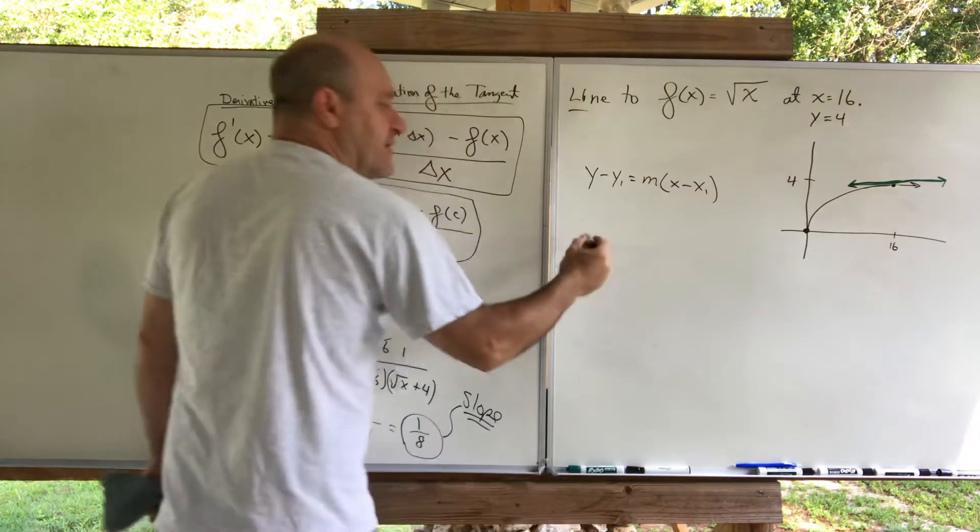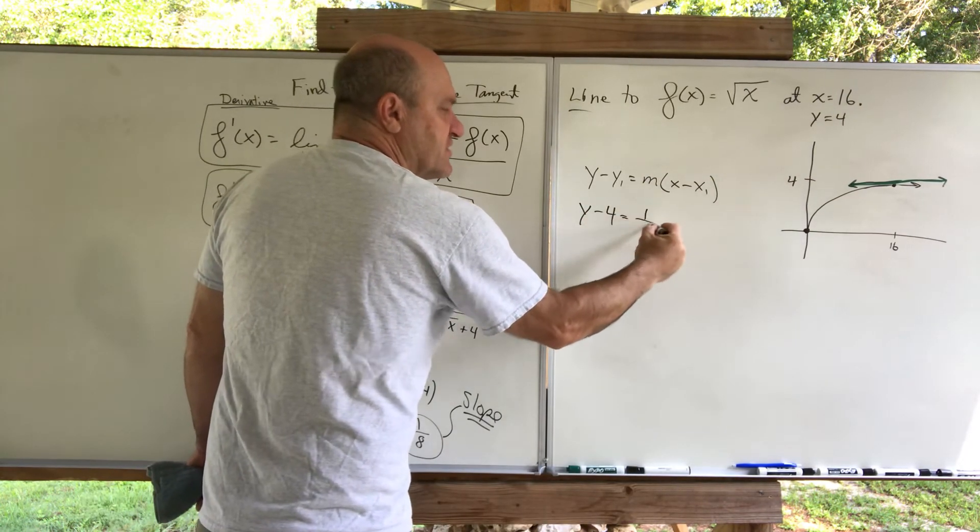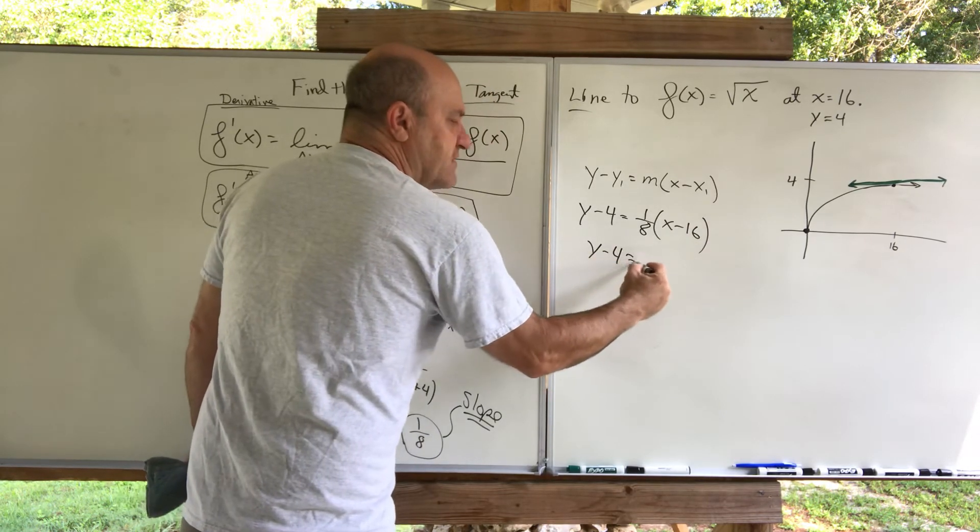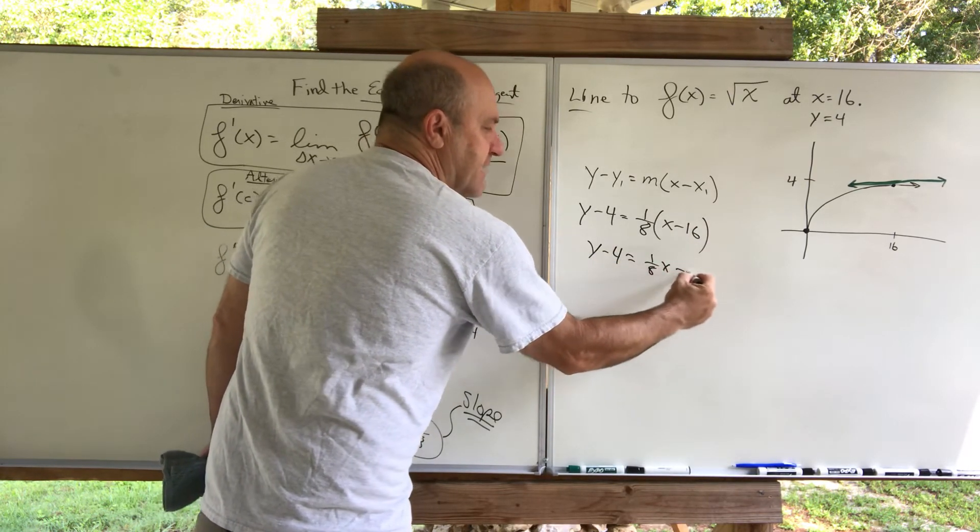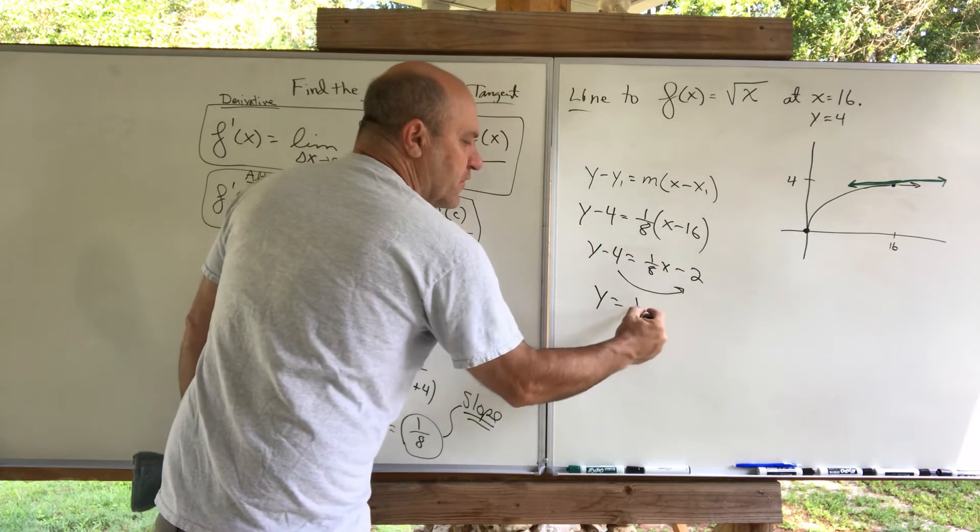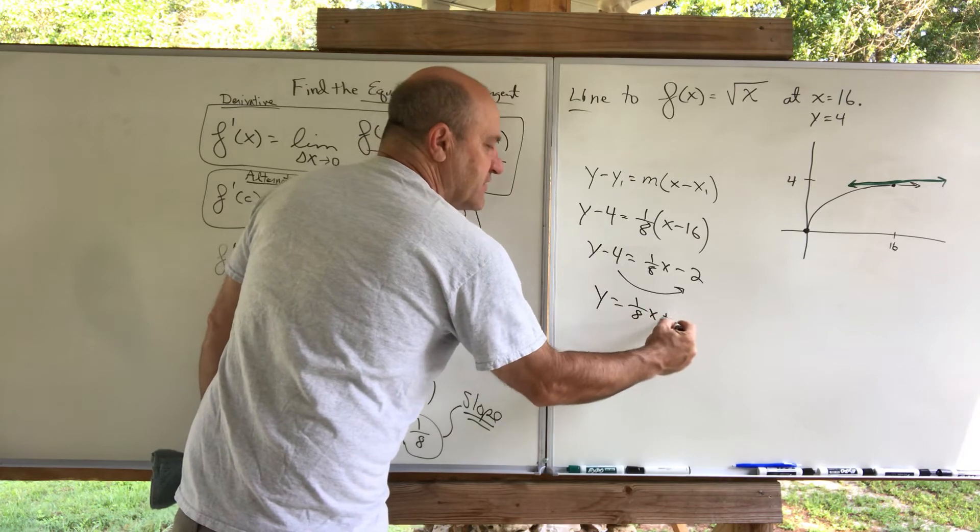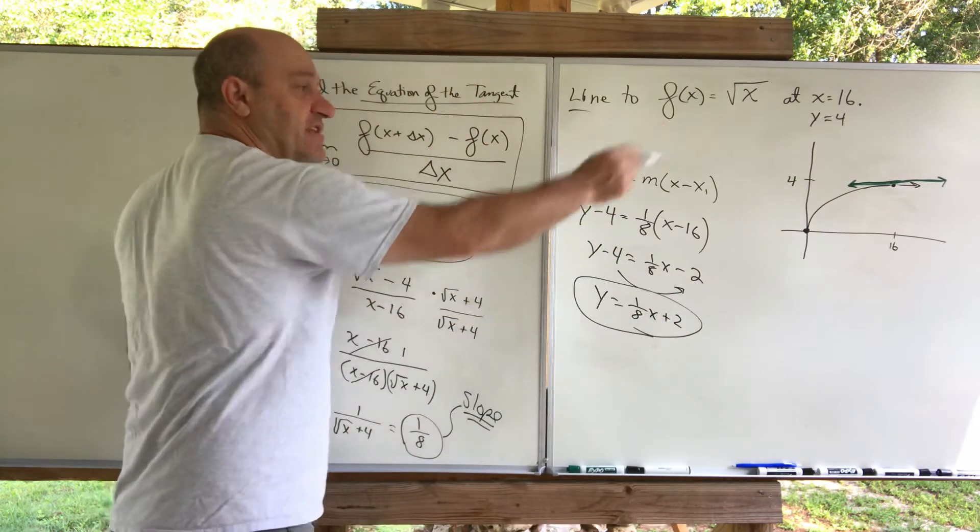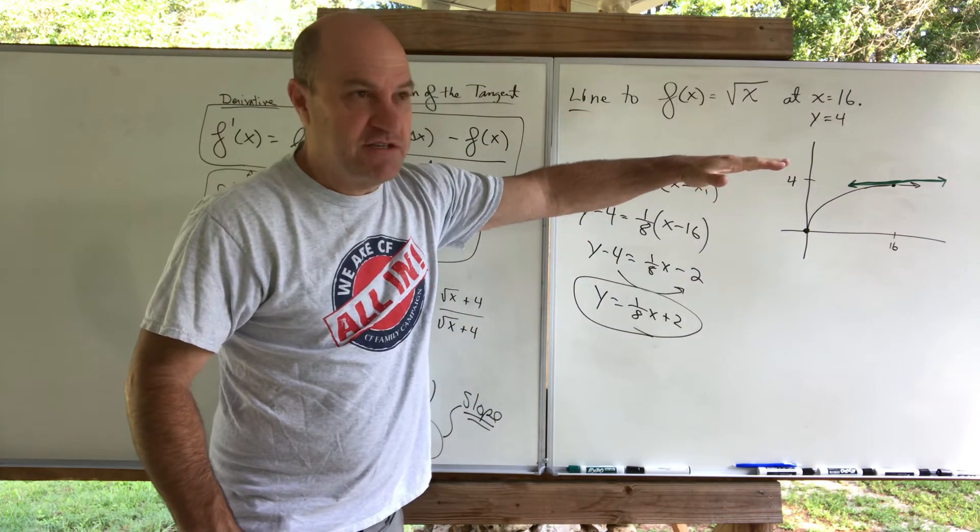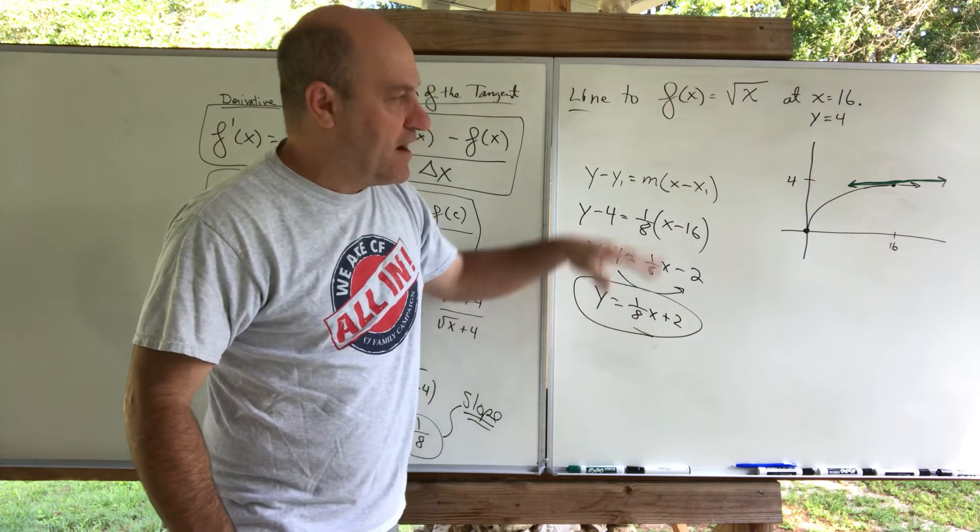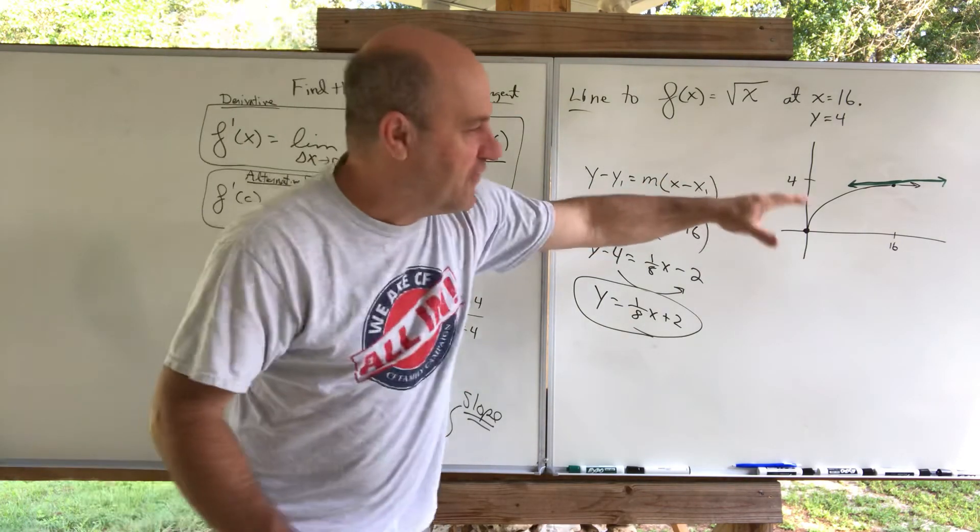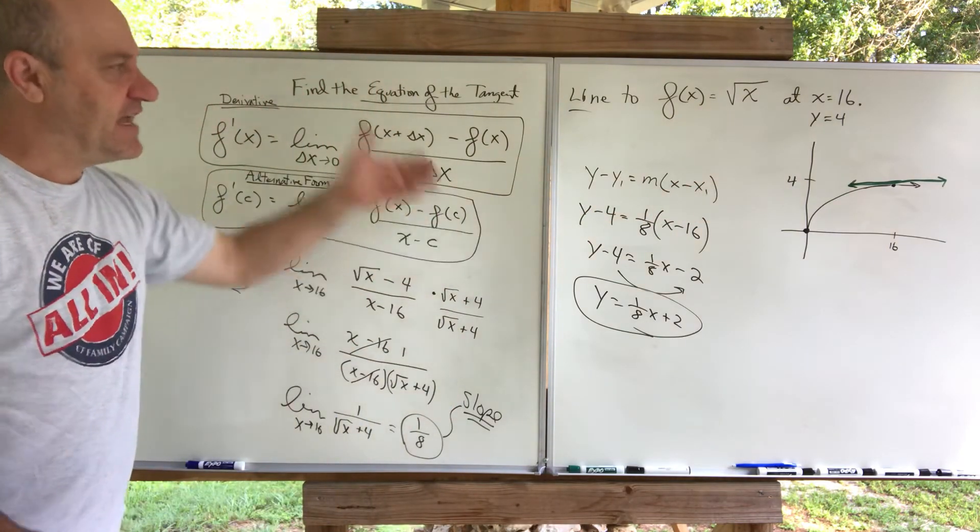So there's my point. So here I go. y minus 4 equals the slope times x minus 16. I'll just clean it up. y minus 4 equals 1 eighth x minus 2. When you distribute, add this 4 over here. y equals 1 eighth x plus 2, I guess. I guess that's it. That's the equation of that green line over there. You can tell it barely has, it doesn't have too much of a steep slope. In fact, the slope is only 1 eighth. So that's an accurate picture. It's a little off, but it's a good picture. That's the equation of the tangent line. And I use this alternative form.